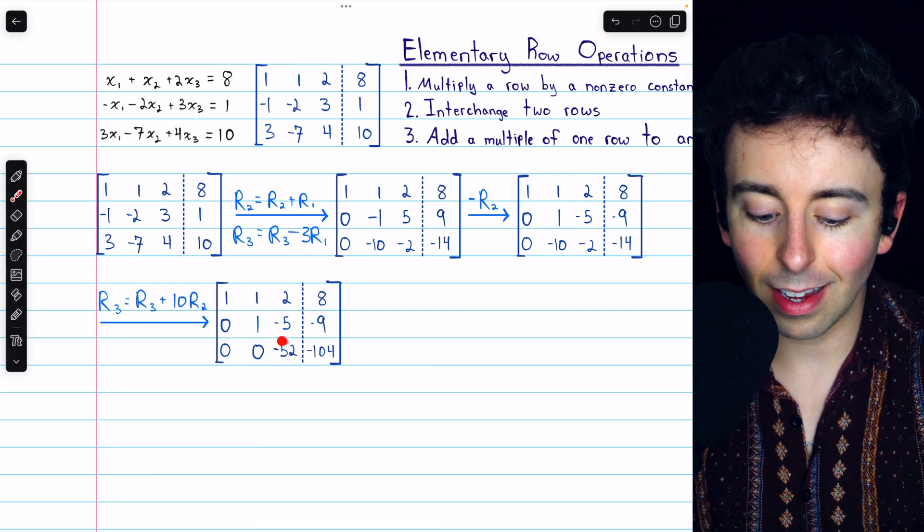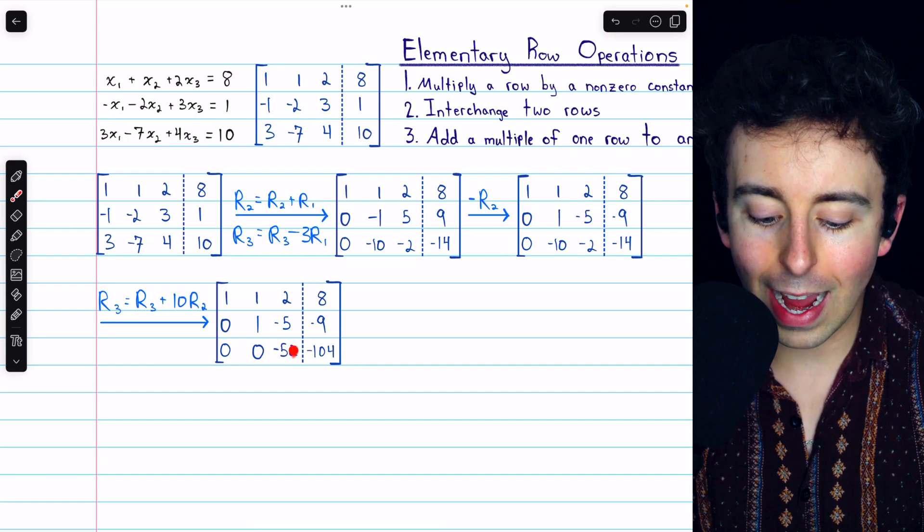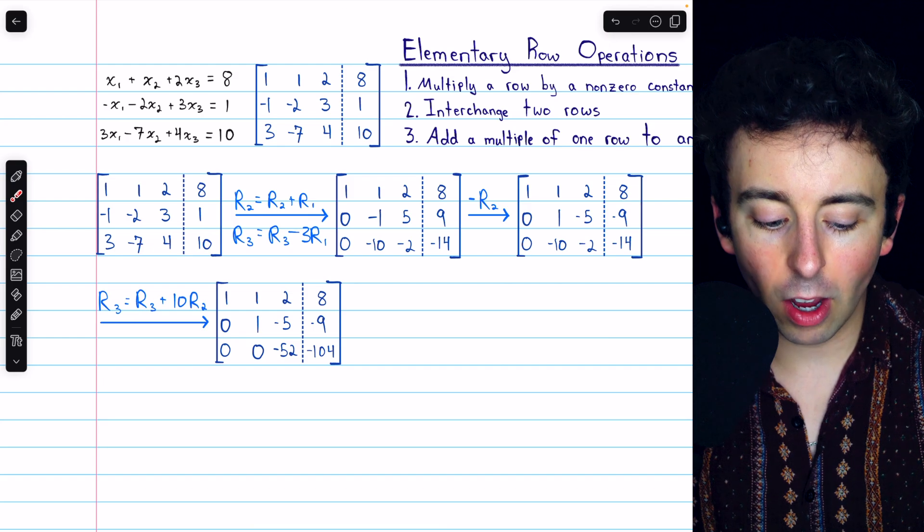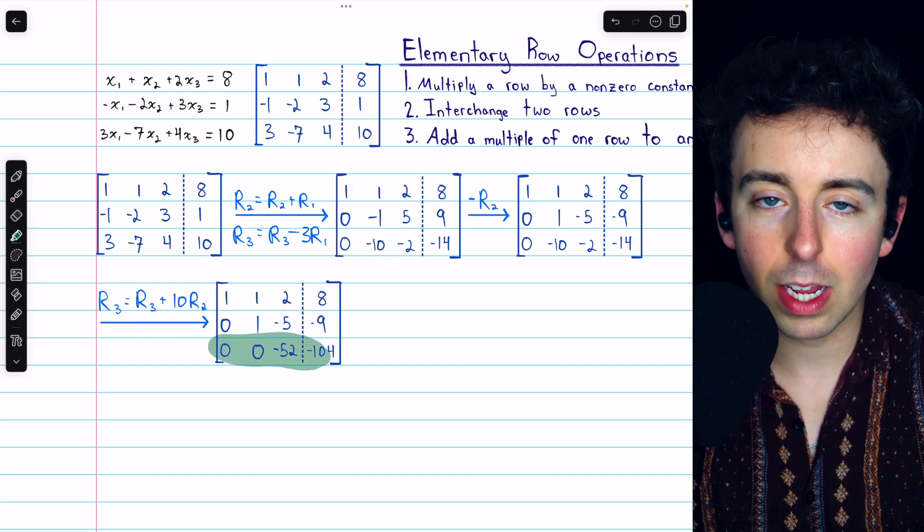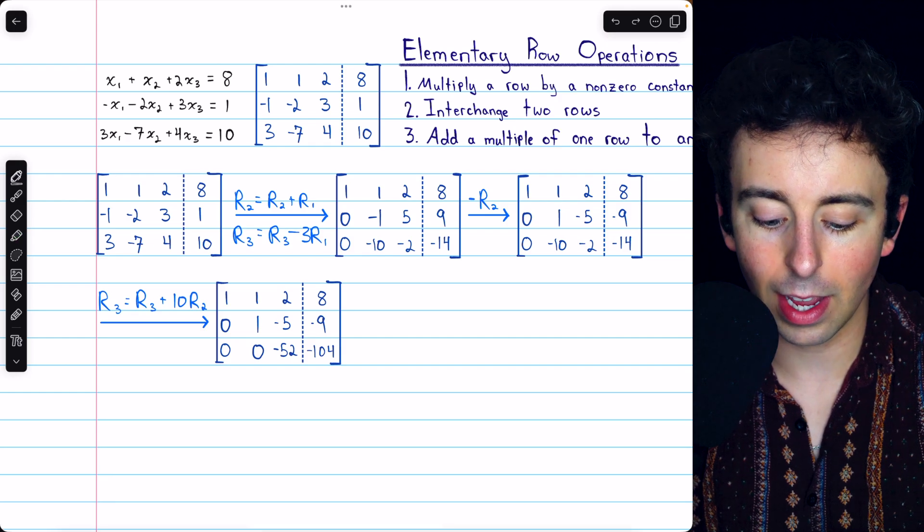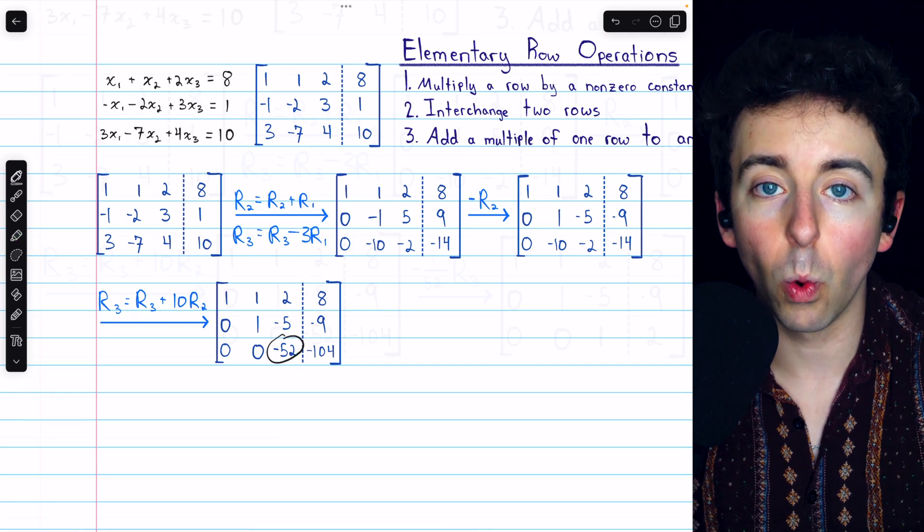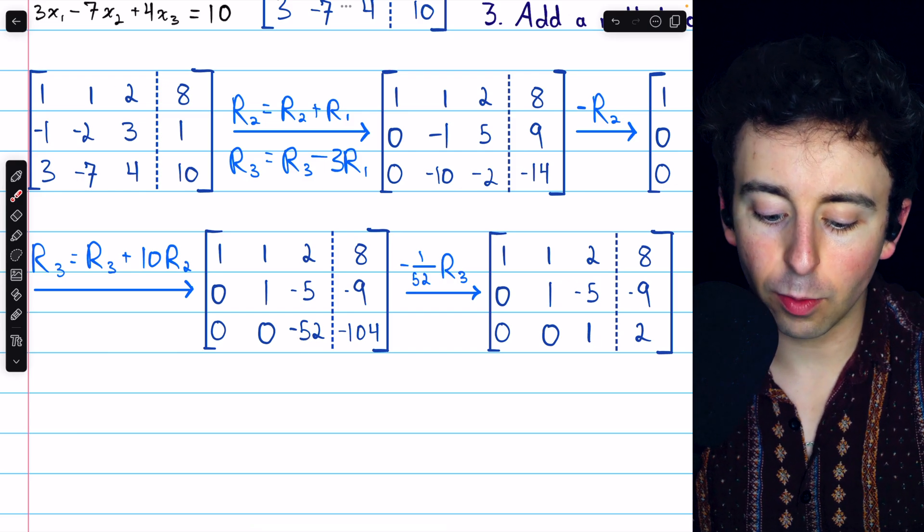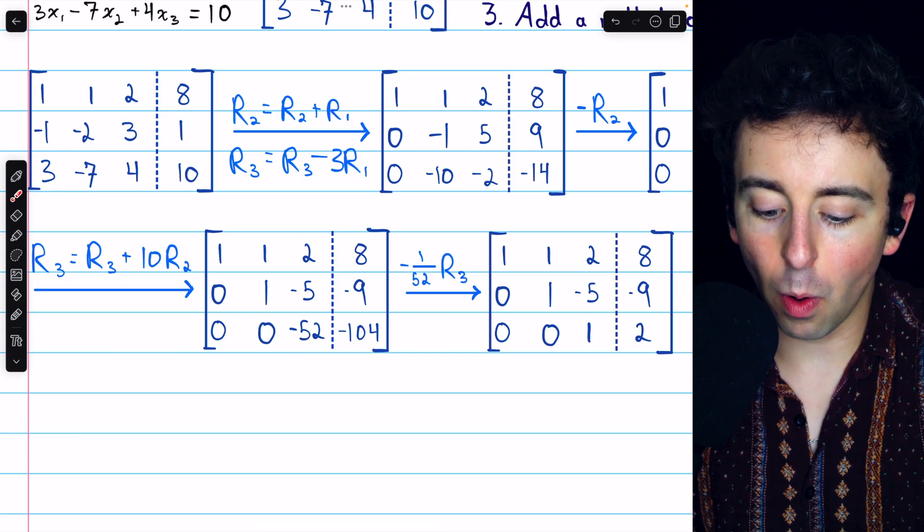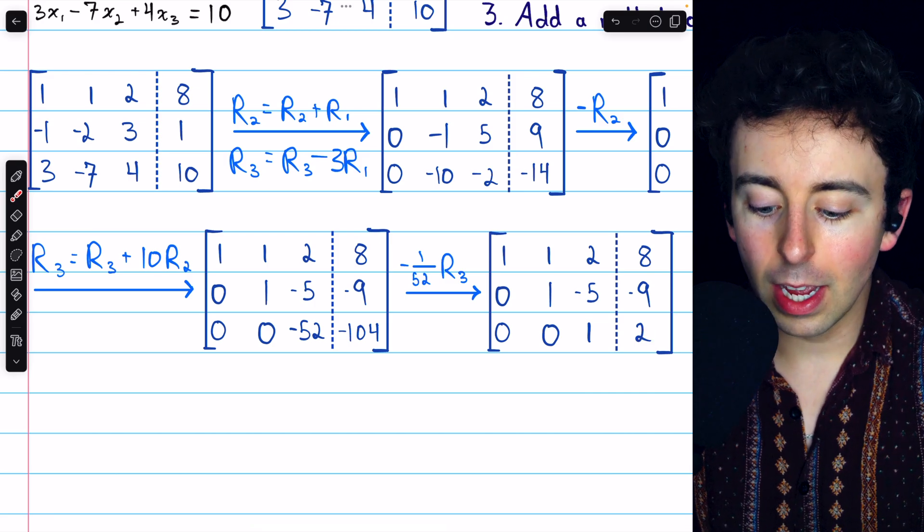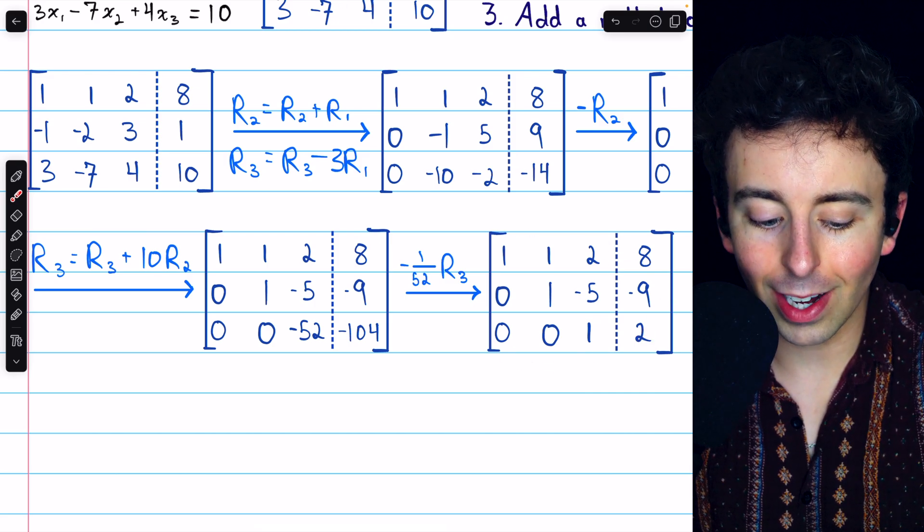Finally, we want this first non-zero entry in row 3 to be a positive 1. So we'll multiply row 3 by negative 1 over 52 to turn this into a positive 1. And that gets us here. That negative 52 is now positive 1. And negative 104 times negative 1 over 52 is positive 2. So this is exactly where we were trying to get.